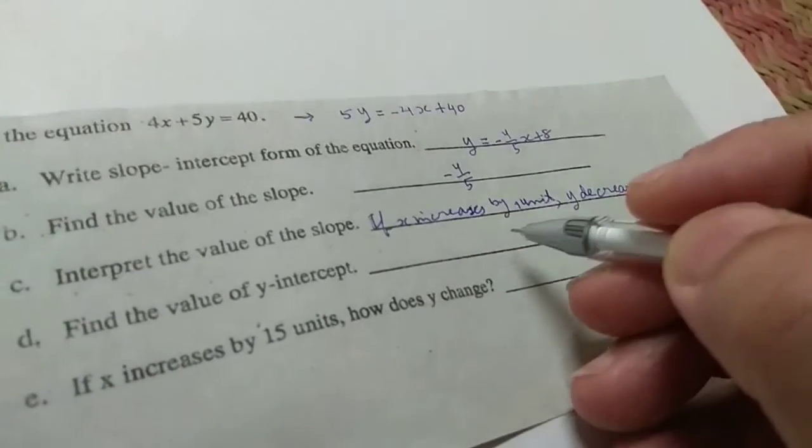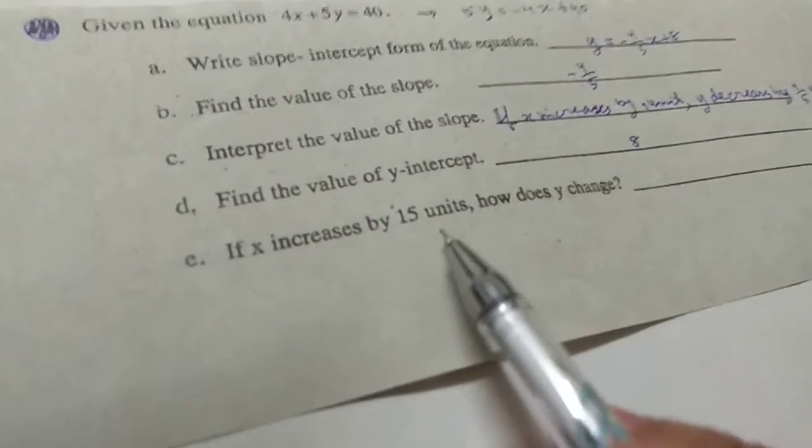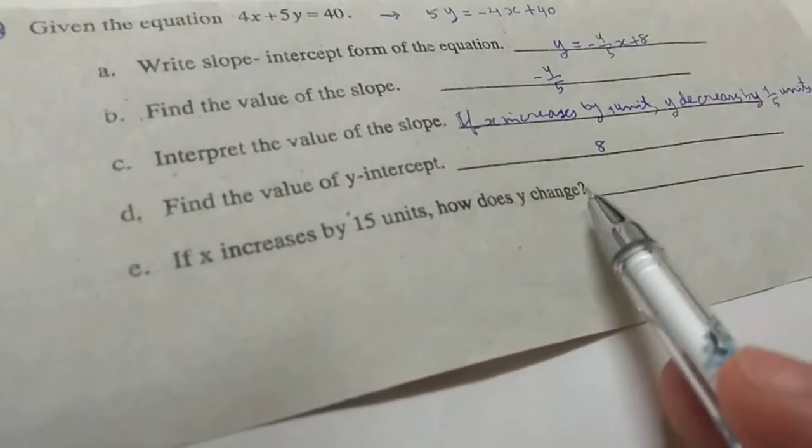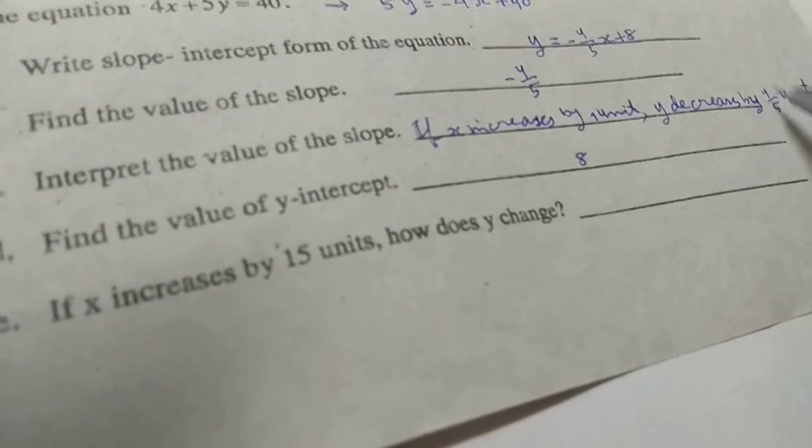Find the value of y intercept. So if x increases by 15 units, how does y change? So 1 unit, 4/5.